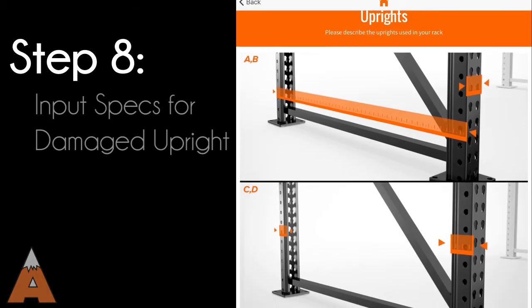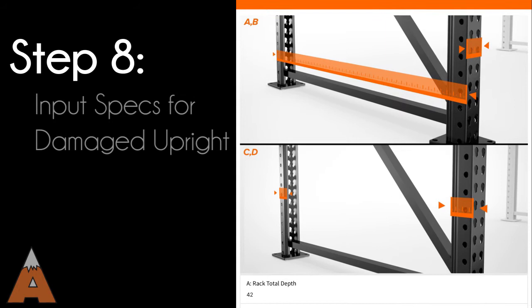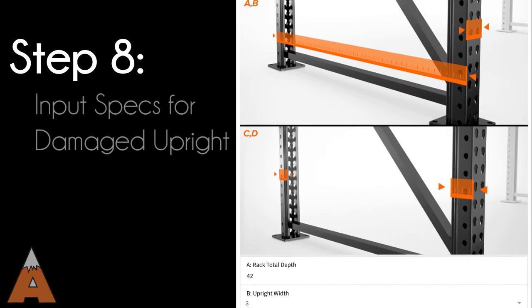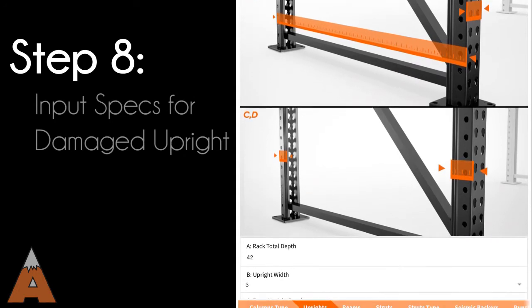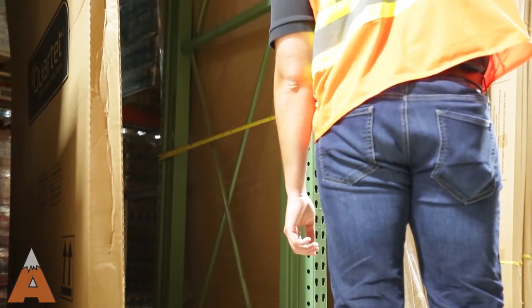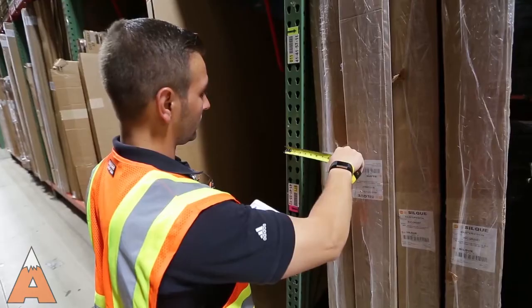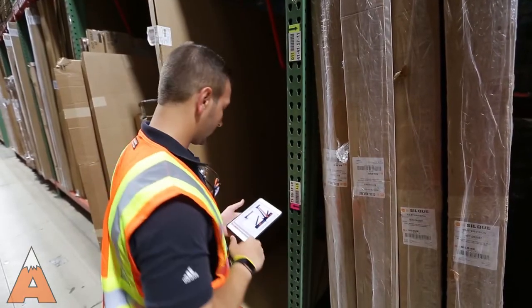You are now ready for more measurements. You will need the full depth and width of the rack upright and both the depth and width of the front and rear columns. All dimensions are clearly shown in diagrams within the app.